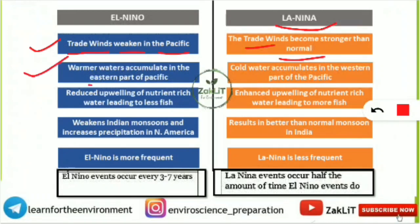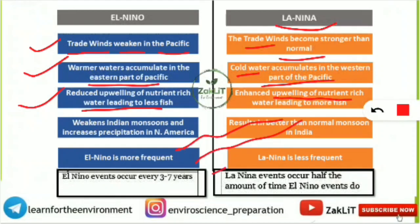Next difference: during El Niño, warmer water accumulates in the eastern part of the Pacific, while cold water accumulates in the western part. El Niño also leads to reduced upwelling of nutrient-rich water, leading to less fish. When the temperature increases, nutrient upwelling reduces and fish are unable to get nutrients, so they die. In La Niña, upwelling takes place normally, so the water is richer in nutrients and supports more fish.